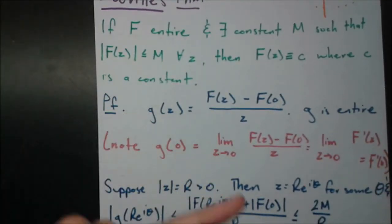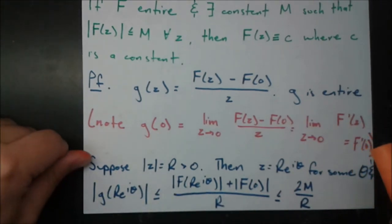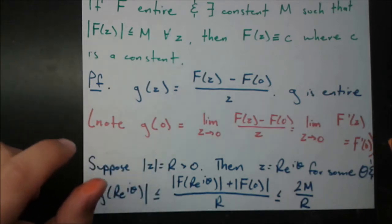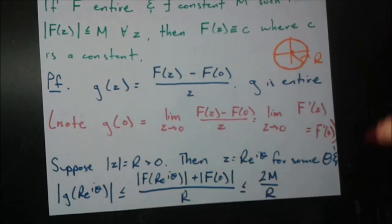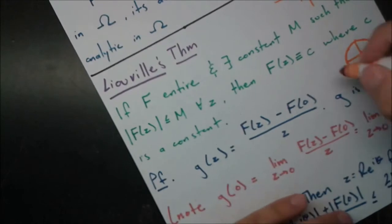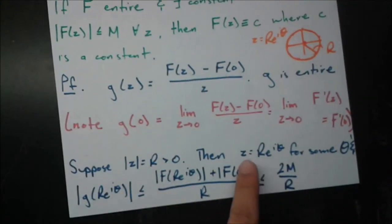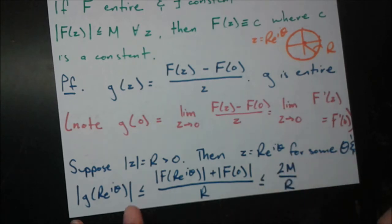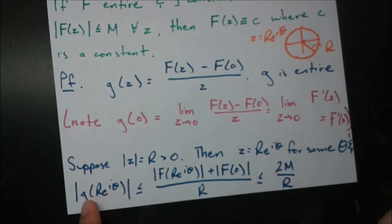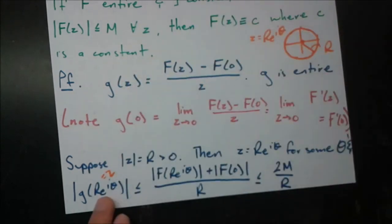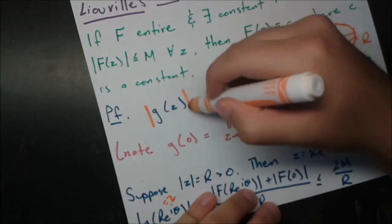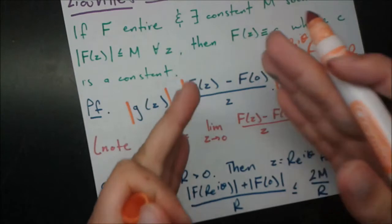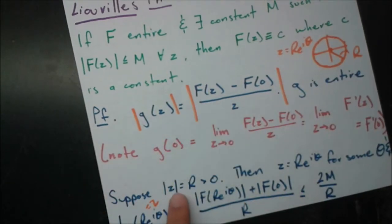Next, suppose the modulus of z equals r — restricting attention to numbers z lying on the circle centered at zero with radius r. We can parametrize them as z = r·e^(iθ). Then the modulus of g(z) is less than or equal to the modulus of the numerator over the modulus of the denominator. The modulus of the denominator is just |z| = r.